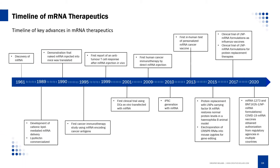Let's sort out the key progress of messenger ribonucleic acid therapy. mRNA was first discovered in 1961, eight years after the DNA double helix discovery. In the 1990s, mature delivery technology greatly promoted the research of mRNA treatment. Since then, mRNA therapy has shown considerable promise in the prevention and treatment of a variety of diseases.